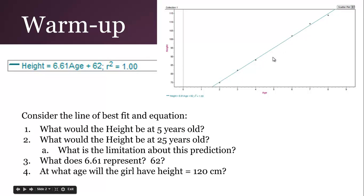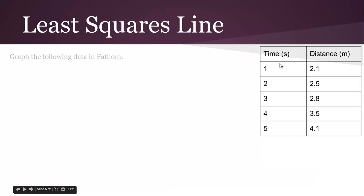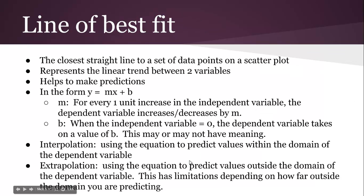If we predict values on the graph, if we're going outside the graph a little bit, it's called extrapolating. It's using the equation to predict values outside the domain. This really has limitations depending on how far outside the domain you're predicting. Like you can maybe predict for when the girl is 12 years old, but not so much when the girl is 25 years old.